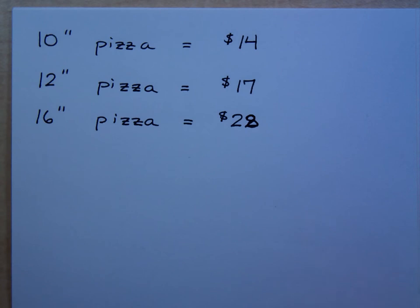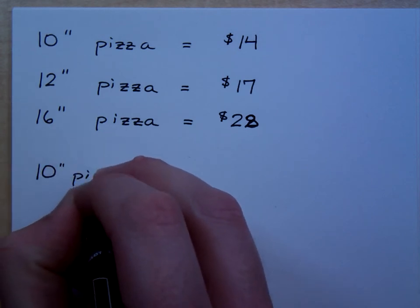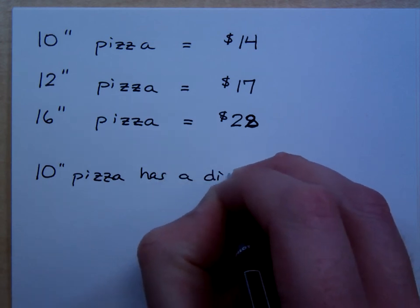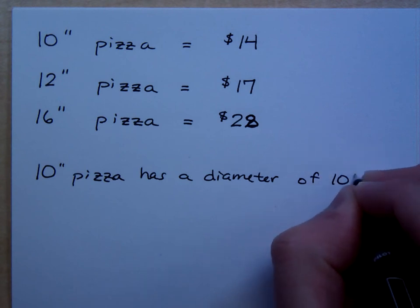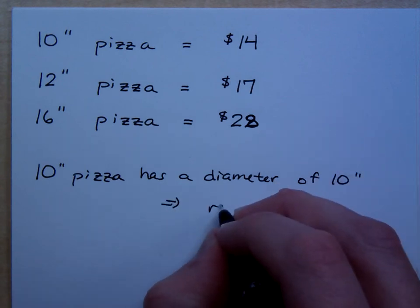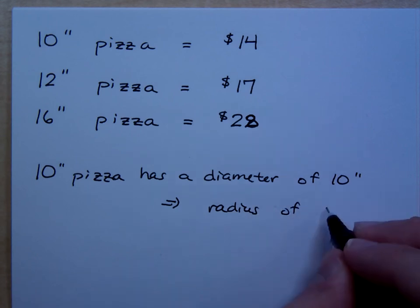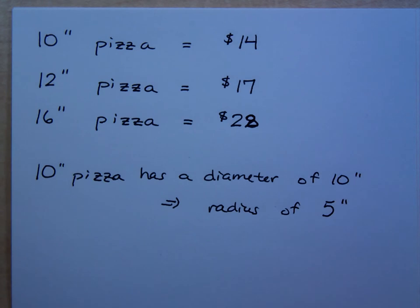It measures the diameter, right? So for a 10-inch pizza, let's do this. 10-inch pizza has a diameter, of course, of 10 inches, which means that it has a radius of what? If the diameter is 10, what's the radius? It's 5. Now, why do I want to find the radius?